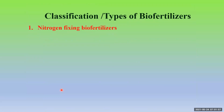If you just want to classify them: nitrogen fixing biofertilizers generally include algae and bacteria like Rhizobium, which is a symbiotic nitrogen fixing bacteria, then Azospirillum, Azotobacter. Looking at algae, we have cyanobacteria like Nostoc, Anabaena, Tolypothrix, etc. Then we have Azolla fern which is also used as a nitrogen fixing biofertilizer.